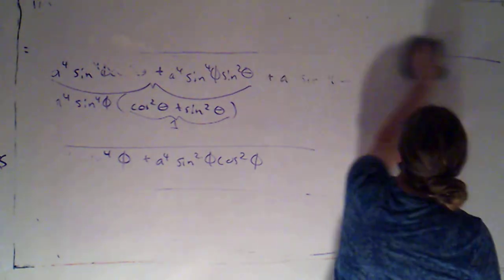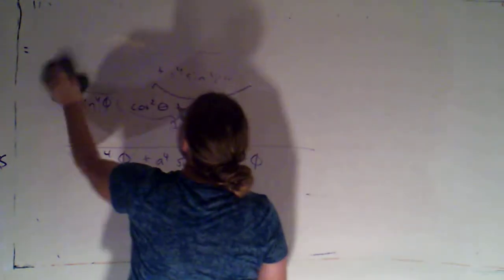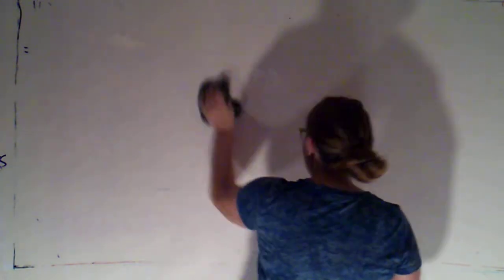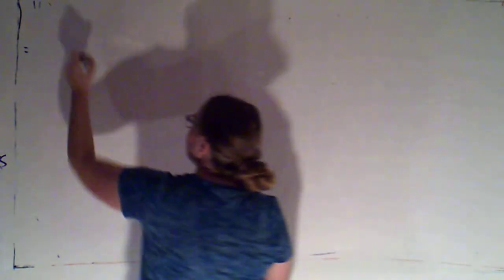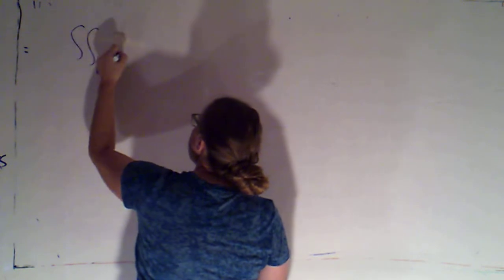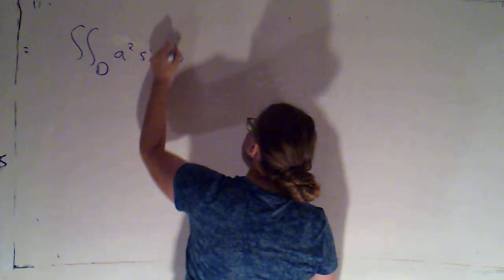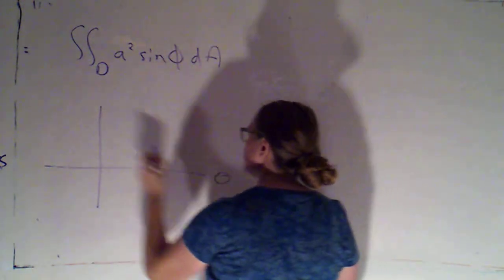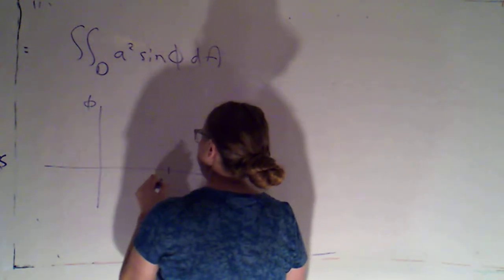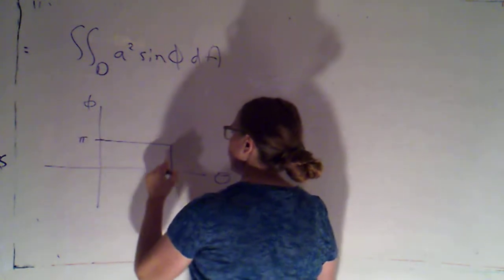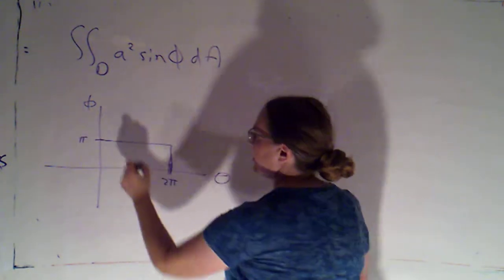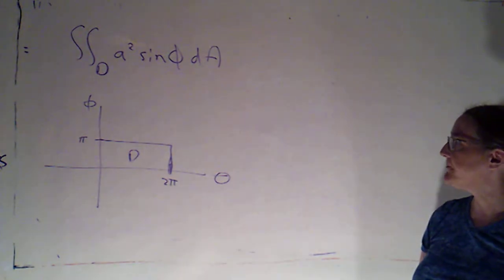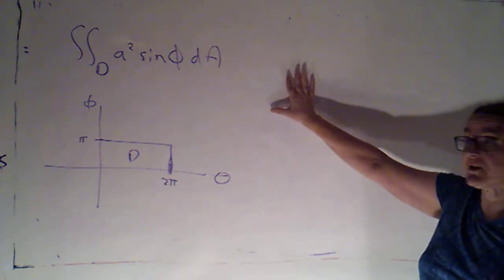Okay, but what we got was a squared sine phi. So now I know that we're just integrating over d A, a squared sine phi d A. And d remember was this rectangle in the theta phi plane where theta went from zero to two pi and phi went from zero to pi.